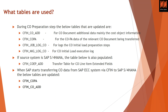The key tables involved are: CFIN_CO_ADD, which holds additional data mainly for cost object information; CFIN_COPA for COPA data; and two log tables for tracking. If your source system is S/4 HANA, there is an additional transfer table COEP_ADD. When SAP transfers CO data via Central Finance to S/4 HANA, the tables updated are CFIN_COPA and CFIN_ADD.